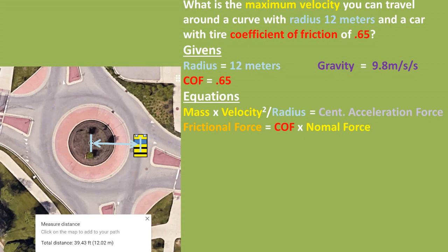The equations we'll be using are mass times velocity squared over the radius of the path equals the centripetal force needed to keep the car on the path. We will also be using the frictional force equals the coefficient of static friction times the normal force of the vehicle.